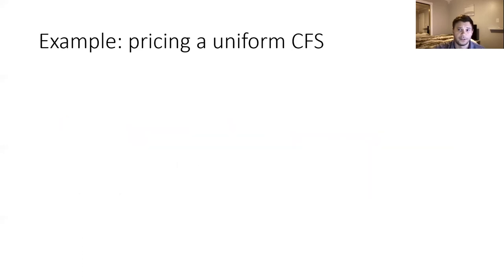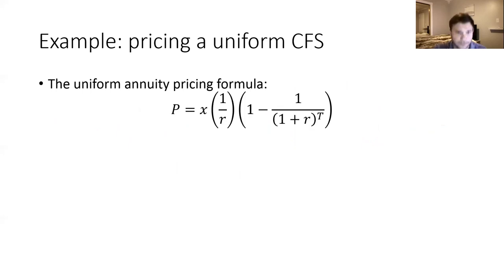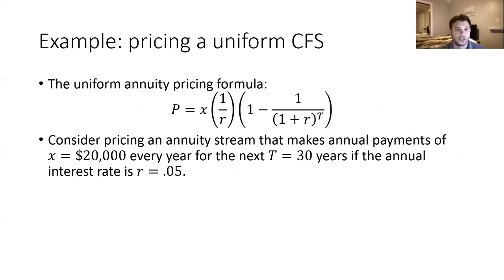Let's take a look at an example of applying the uniform annuity pricing formula that we've just derived. We're going to utilize the pricing formula in terms of the interest rate and use it to think about pricing an annuity stream that makes annual payments of $20,000 every year for the next 30 years at an annual interest rate of 5%. This is actually a type of asset that people buy — they buy a thing called an annuity — typically when preparing for retirement, since when you retire you won't have any work income.